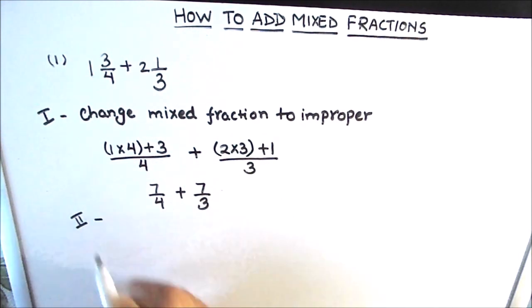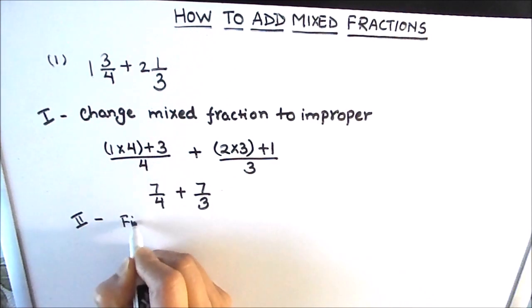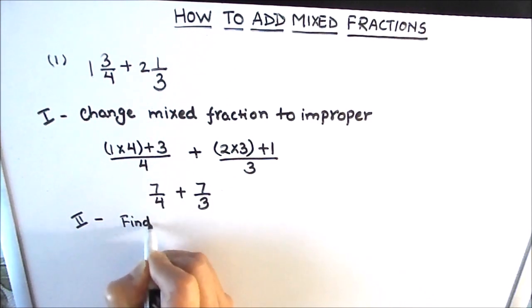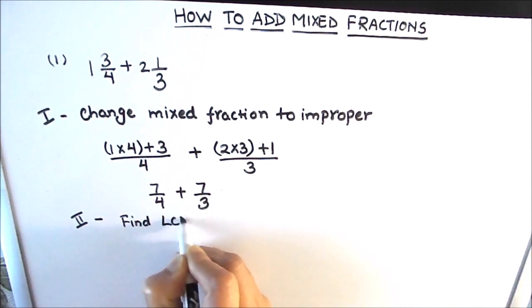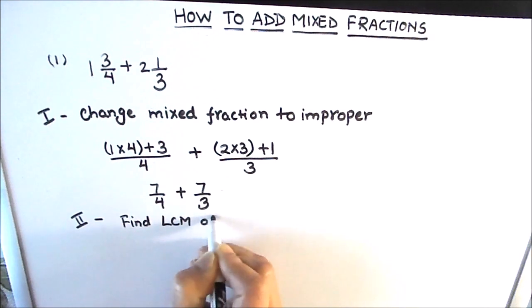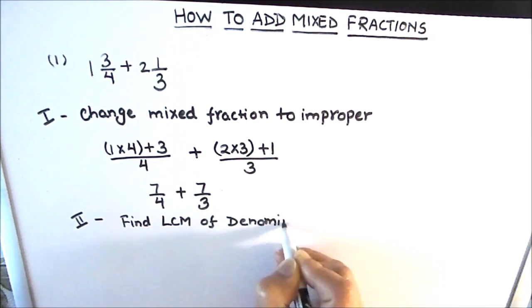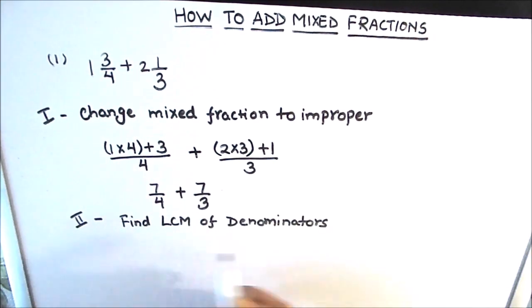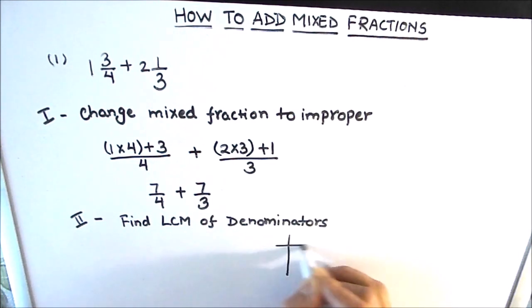Now we come to the second step. The second step is to find the LCM of the denominators. Here our denominators are 4 and 3, so let's find the LCM of the denominators.